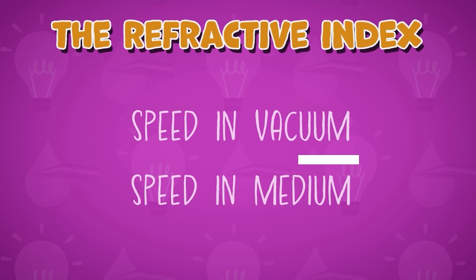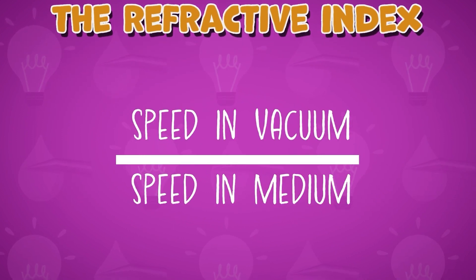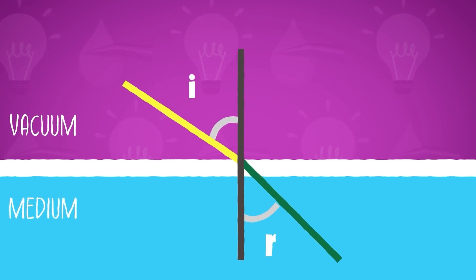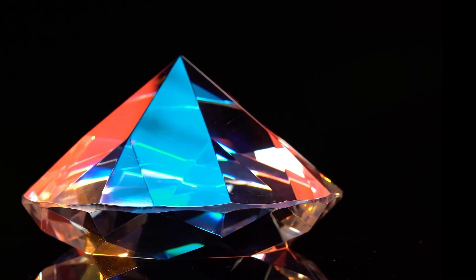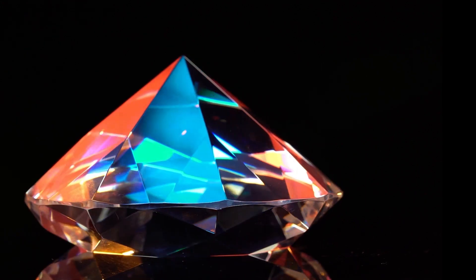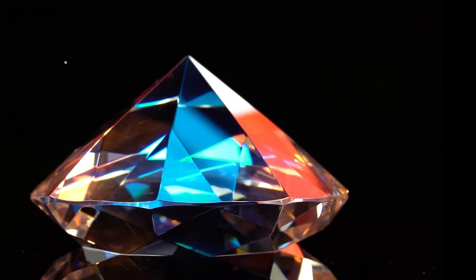The refractive index is a number that tells us how much a material can bend light. The higher the refractive index, the more the light will bend. For instance, diamond has one of the highest refractive indices, which is why diamonds sparkle so brilliantly.